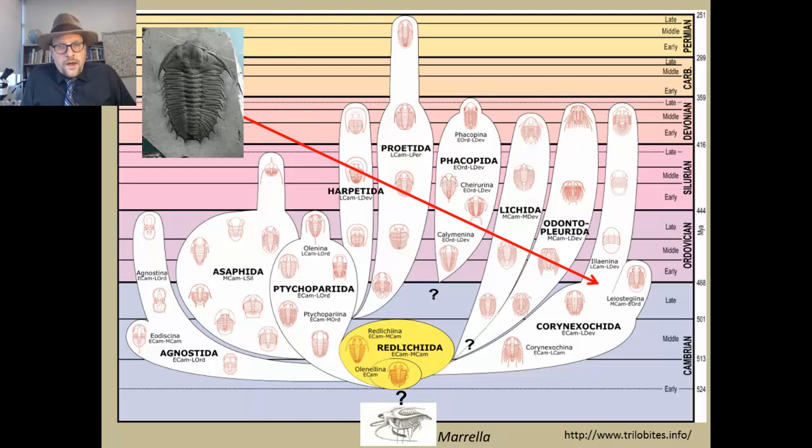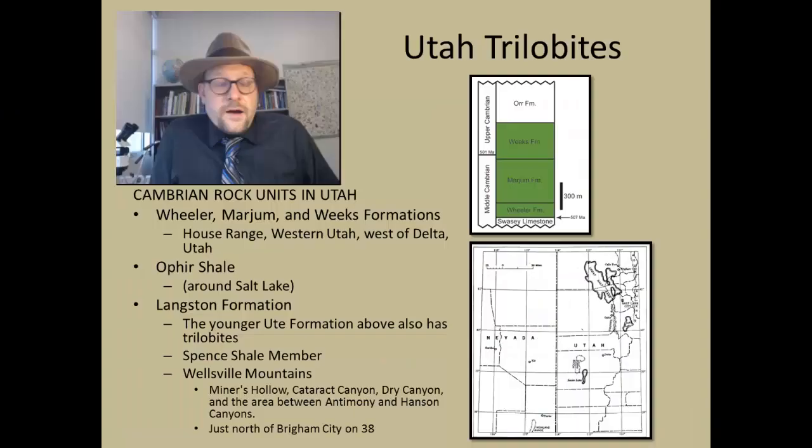And then we have the Corynexochida. These are a group of trilobites—some of them have spines, but many of them forego those later on, and they extend all the way up into the Devonian.